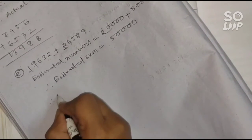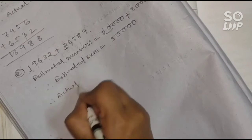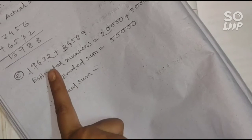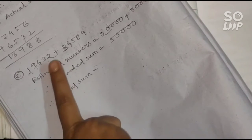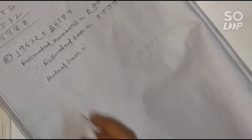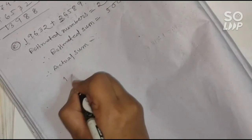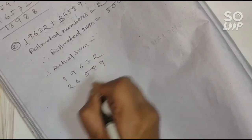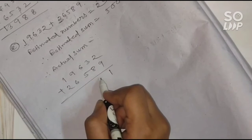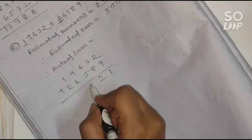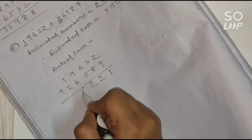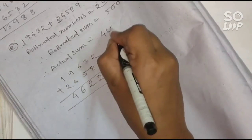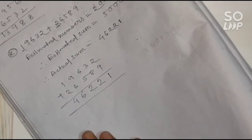The estimated sum is 20,000 plus 30,000, which equals 50,000. Now for the actual sum, arrange the numbers in columns: 19632 plus 26589. Adding: 2 plus 9 is 11, carry 1; 3 plus 8 is 11 plus 1 is 12, carry 1; 6 plus 5 is 11 plus 1 is 12, carry 1; 9 plus 6 is 15 plus 1 is 16, carry 1; 1 plus 2 is 3 plus 1 is 4. The actual sum is 46,221.